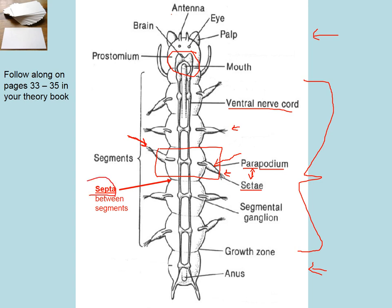We also see septa — membranes between the segments. All segments are pretty much the same except for the last one. This is where new segments are added — the growth zone. New segments grow between the last segment and the penultimate segment, allowing the body to lengthen. The last segment looks a little different; this is where the anus is, and where waste exits the body.